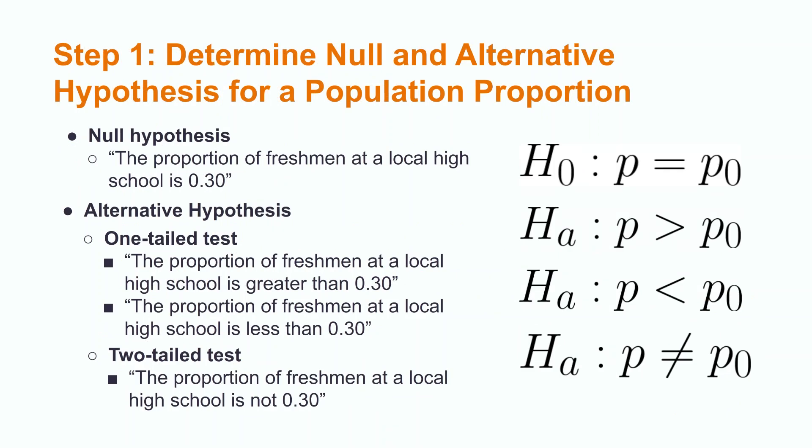The first step in conducting a hypothesis test for the population proportion is setting up our hypotheses. Our hypotheses consist of a null and alternative hypothesis. The parameter in a population proportion hypothesis test is p₀, and the statistic is p̂. The null hypothesis will always be in the form of p equals p₀. An example of a null hypothesis would be: the proportion of freshmen at a local high school is 0.30.